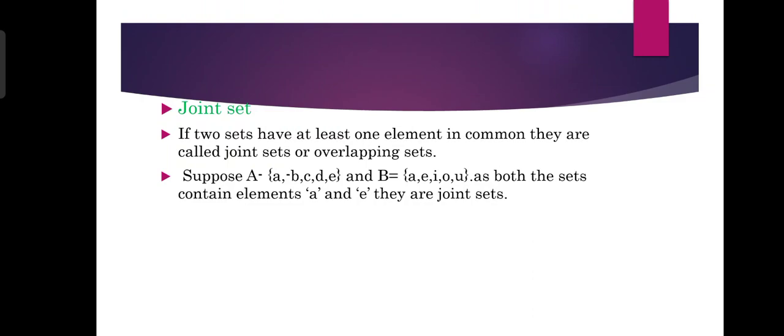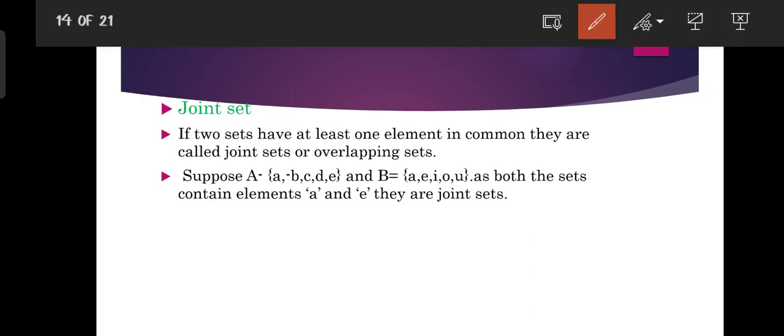Join sets: if we consider two sets and at least one element is common, they are called join sets. For example, suppose A is the set {A, B, C, D, E} and B is the set {A, E, I, O, U}. A and E are common elements in both sets, so at least one element is common, making them a join set.